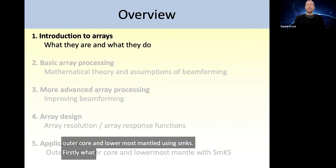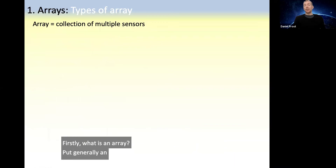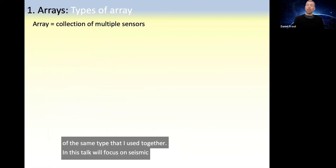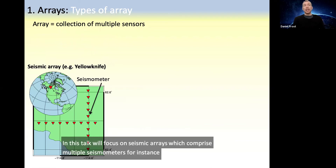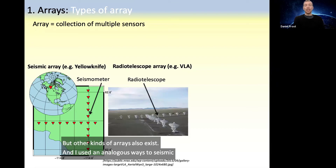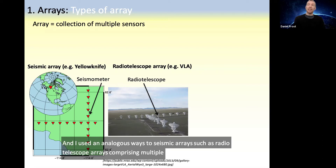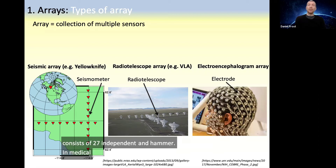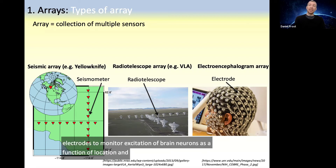What is an array? Generally, an array is a collection of three or more sensors of the same type that are used together. In this talk, I'll focus on seismic arrays, which comprise multiple seismometers. For instance, the Yellowknife array in northern Canada has 18 independent seismometers that can be used together. Other kinds of arrays also exist and are used in analogous ways, such as radio telescope arrays — this is the Carl G. Jansky Very Large Array in Socorro, New Mexico, which consists of 27 independent antennae. In medical science, electroencephalograms use multiple electrodes to monitor excitation of brain neurons as a function of location and time, and this cap contains 100 electrodes.